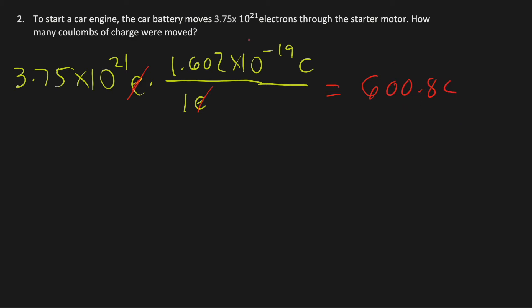Here's the trick: the engine removes electrons through the starter motor, and an electron has a negative charge, so the answer must be negative. The actual answer is negative 600.8 coulombs.